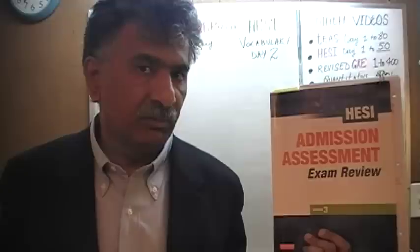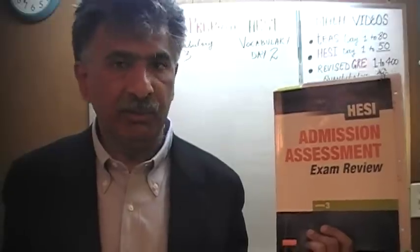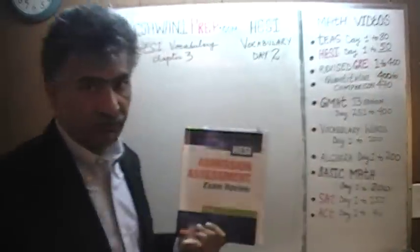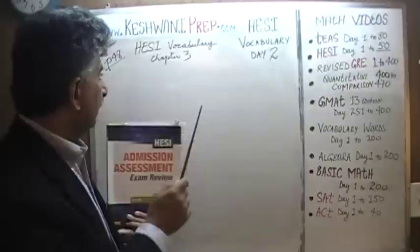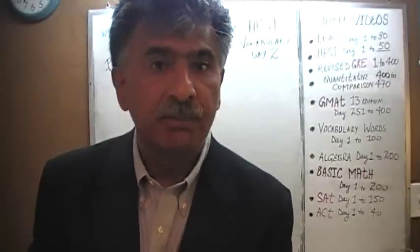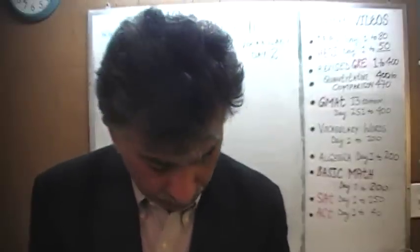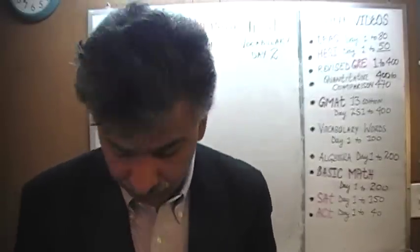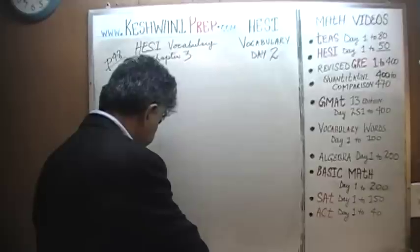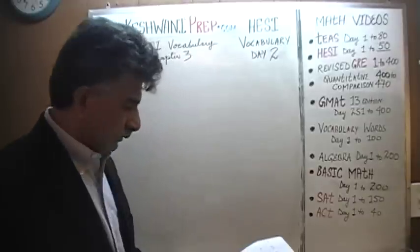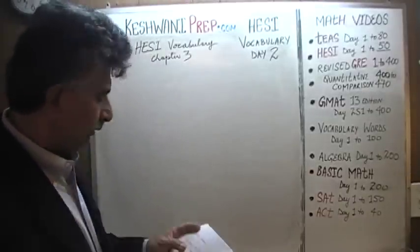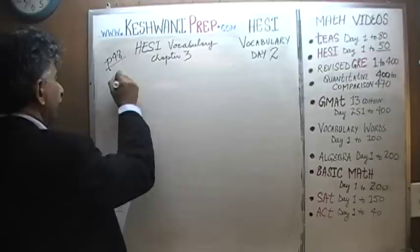Right now, we are in the process of learning vocabulary. Yesterday on day number one — today is our lesson number two — we began doing the vocabulary words that you find in chapter number three, beginning on page number 48. We're going to pick up from where we left off. We did up to number six; next we're going to do number seven.